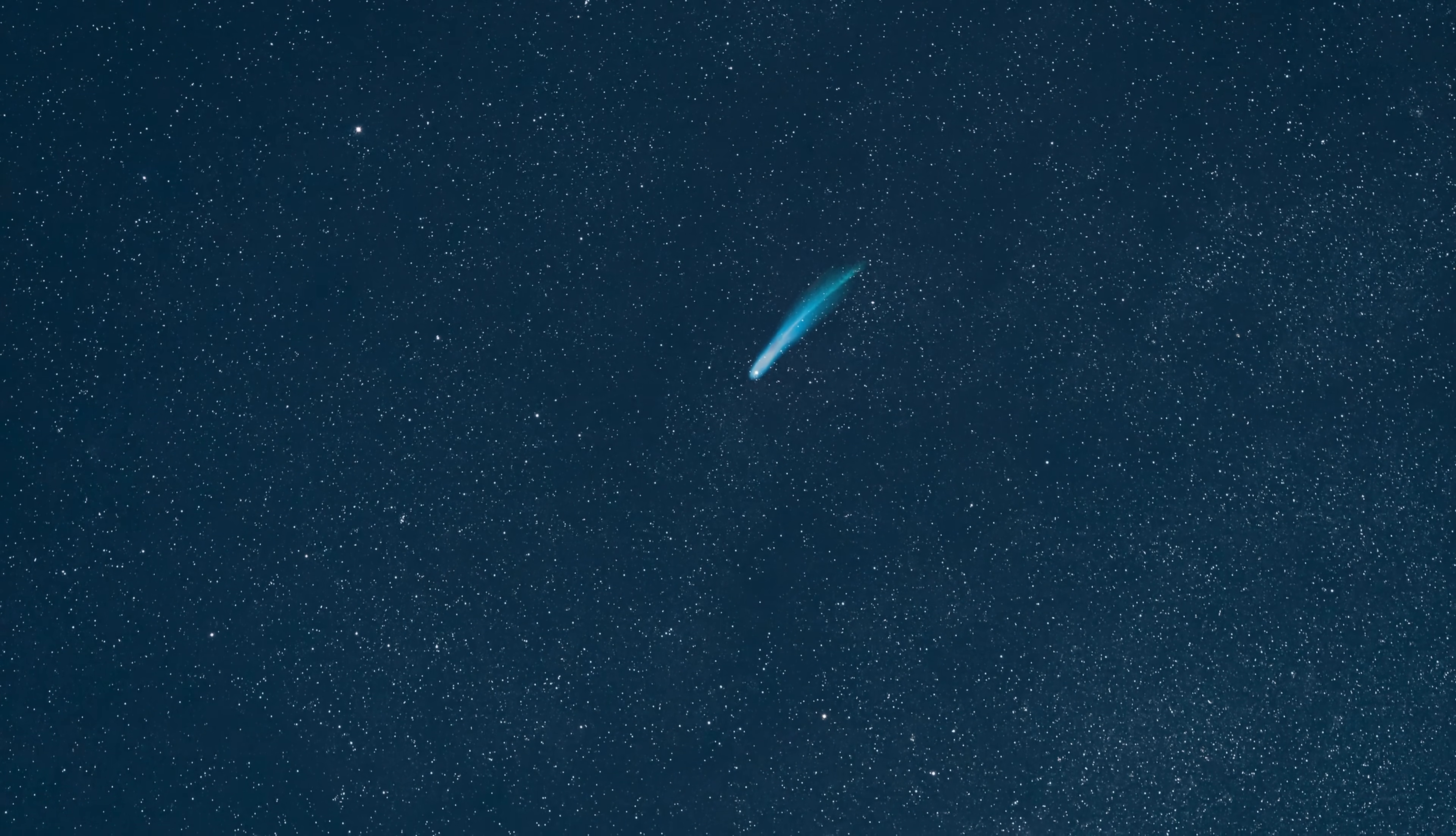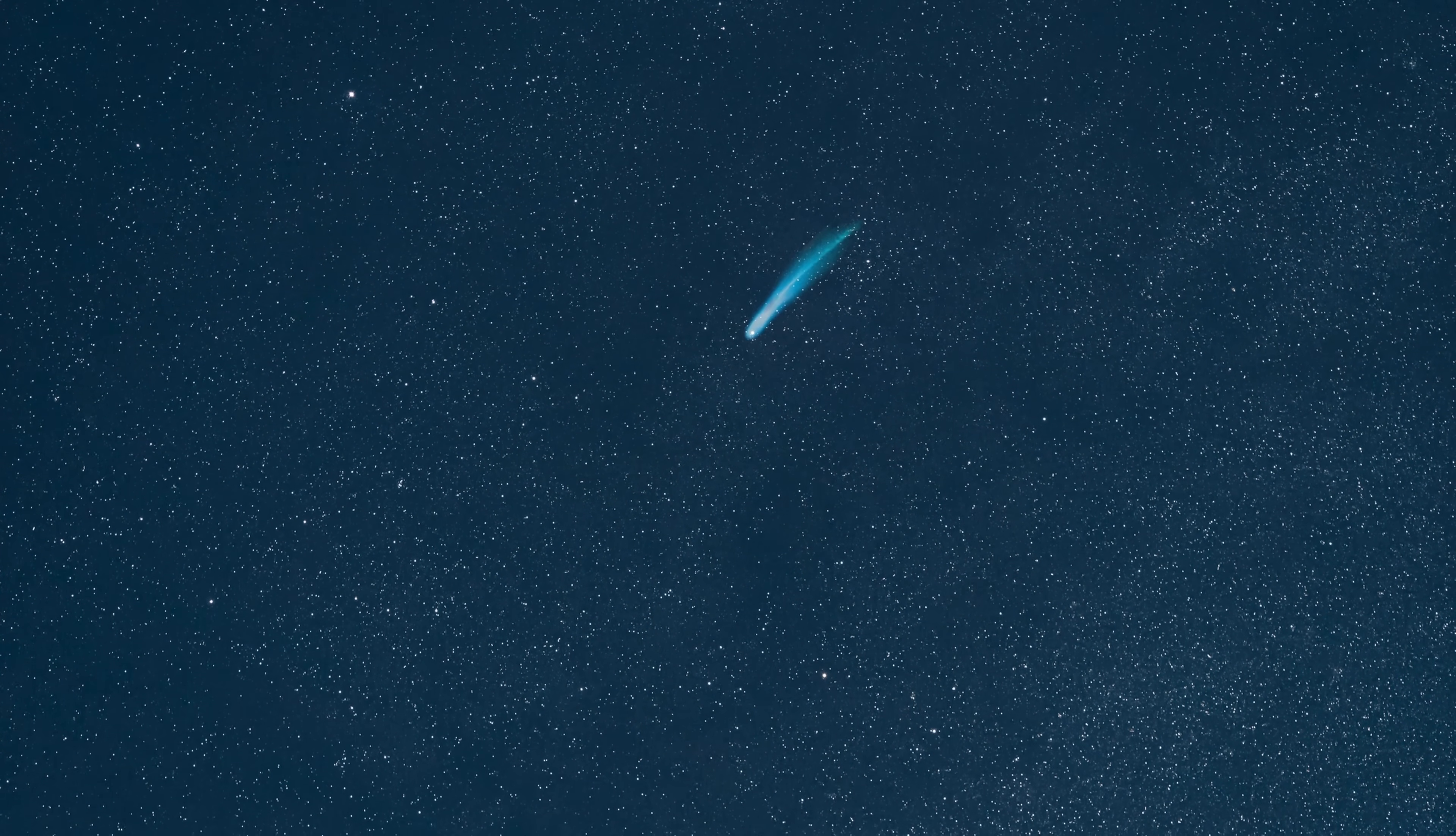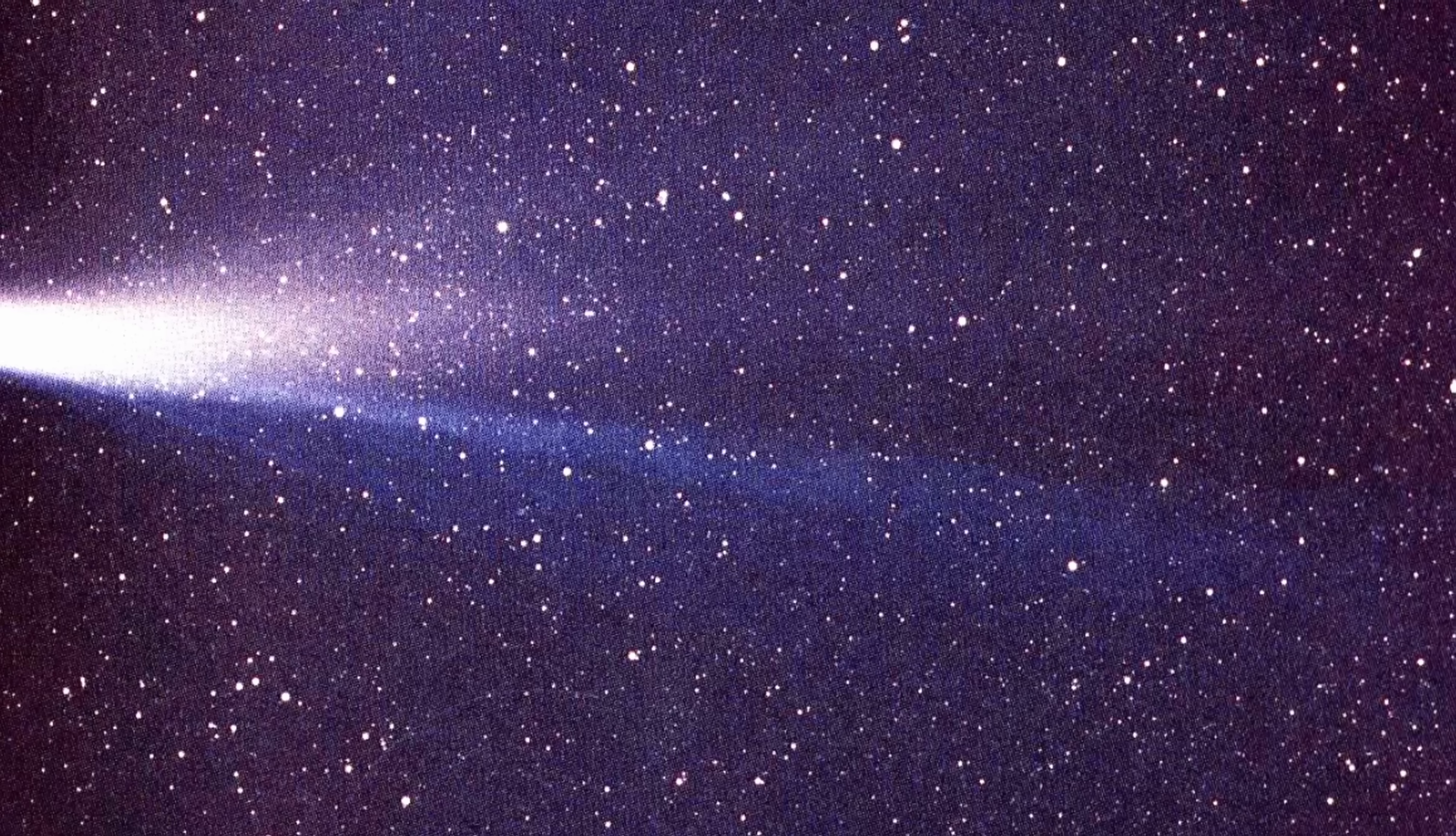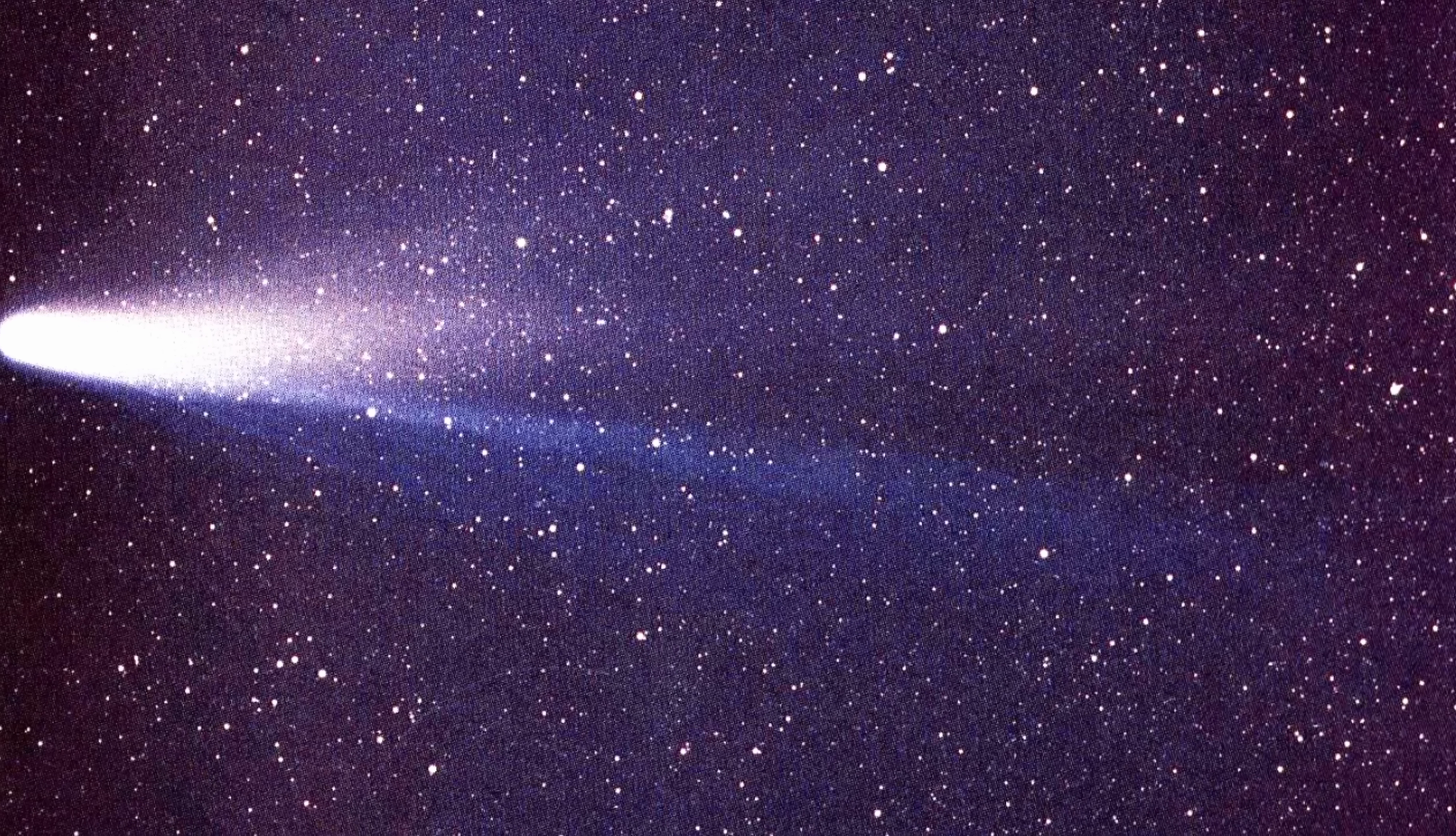He proposed that there actually seems to be a reservoir of comets somewhere on the outskirts of the solar system where most long period comets, like the famous comet Halley, seem to be coming from. He was able to propose this back in 1932, even before we had powerful telescopes.